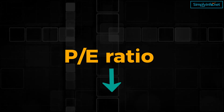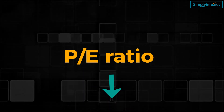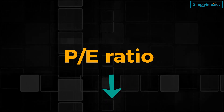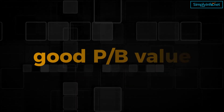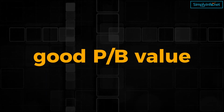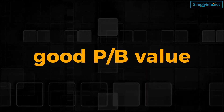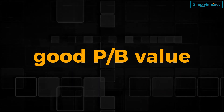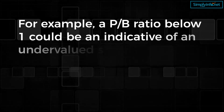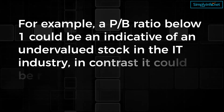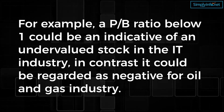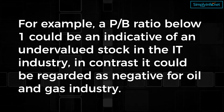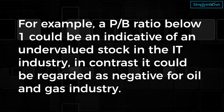To know more about PE ratio, please watch our video on PE ratio — a link is available in the description. As mentioned, the standard for a good PB value varies across industries. For example, a PB ratio below 1 could indicate an undervalued stock in the IT industry, whereas in contrast, it would be regarded as negative for the oil and gas industry.